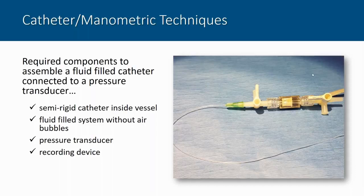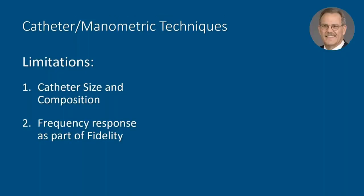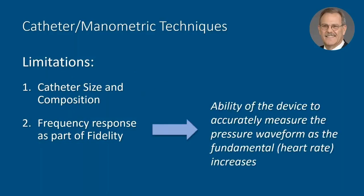The system connects back to a digital data collection recording device. Limitations include catheter size and composition, which affect the ability to cannulate vessels and can affect frequency response. The fidelity of a catheter-manometer system is impacted by the length of the catheter, the diameter of the catheter, and the transducer and recorder system. Generally, the shorter the catheter the better the fidelity, and the larger the diameter the better the fidelity.